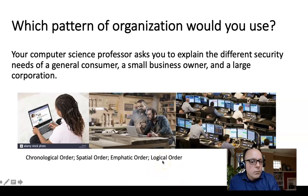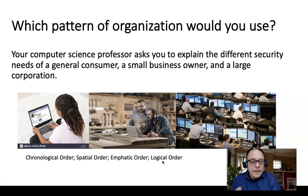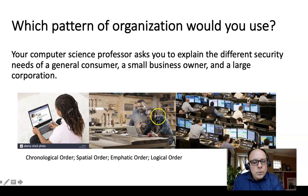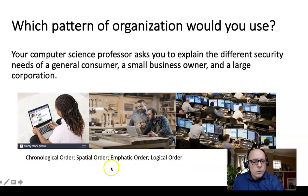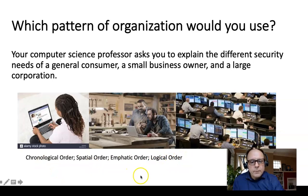I would say logical order might work really well here, because logical order is where we move from general to specific. We have the general user, then the small business owner with more specific needs, and finally the large corporation. You could probably also use emphatic order. I don't really think spatial order is going to work here — it's not a physical description. Logical order would be a really good bet for this one.